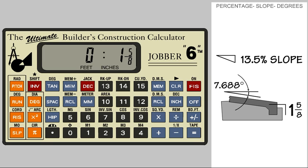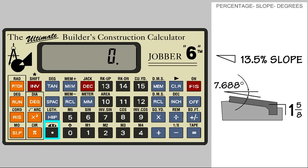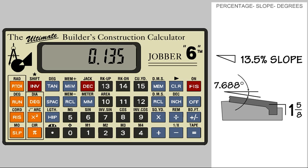Now to get an accurate degree, we need to go back to the decimal mode and enter our percent slope again, which is .135. To find the degree of the angle, we press the invert key and then the tangent key.